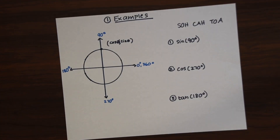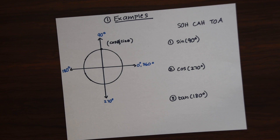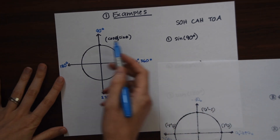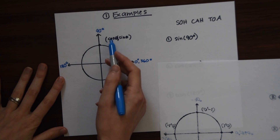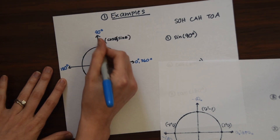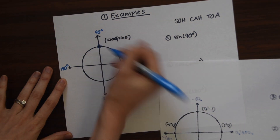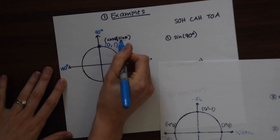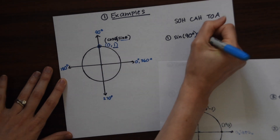Now let's look at our first examples — how to find values of different trig functions using the unit circle. Let's see how we get sine of 90. Remember that cosine is our x-coordinate and sine is our y-coordinate. So we want to know sine of 90. Here's 90 degrees — we look at the coordinate point (0, 1). Since we want sine, represented by the y-coordinate, it's equal to 1.